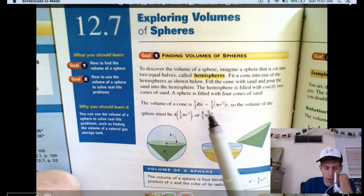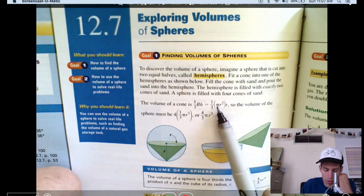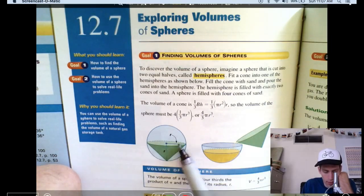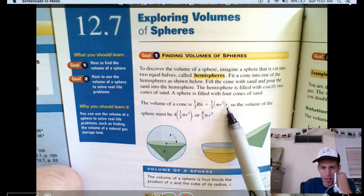So let's see what they do here. One-third area of the base times the height, which is the same in our example, one-third pi r squared, area of the base, times the height. Wait a second. Why isn't this times the height?